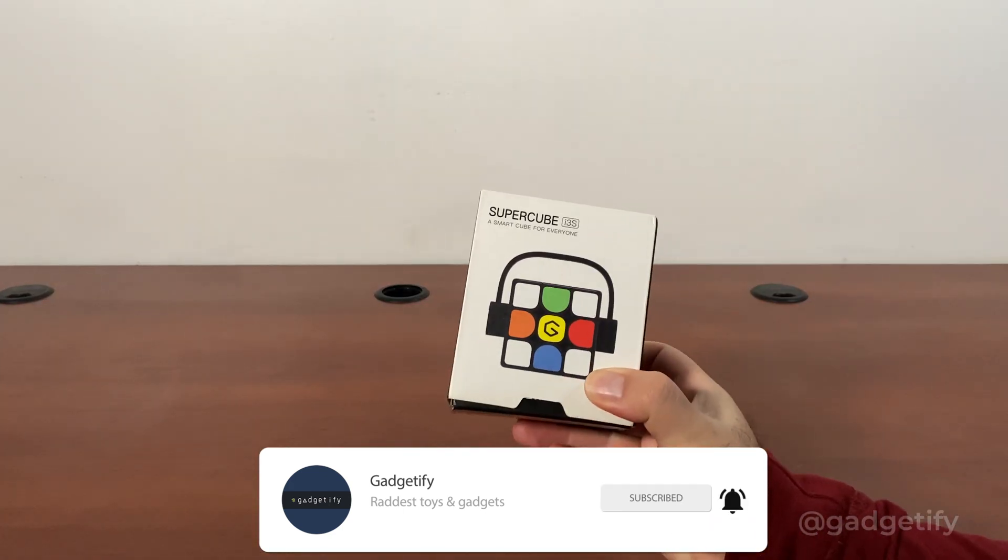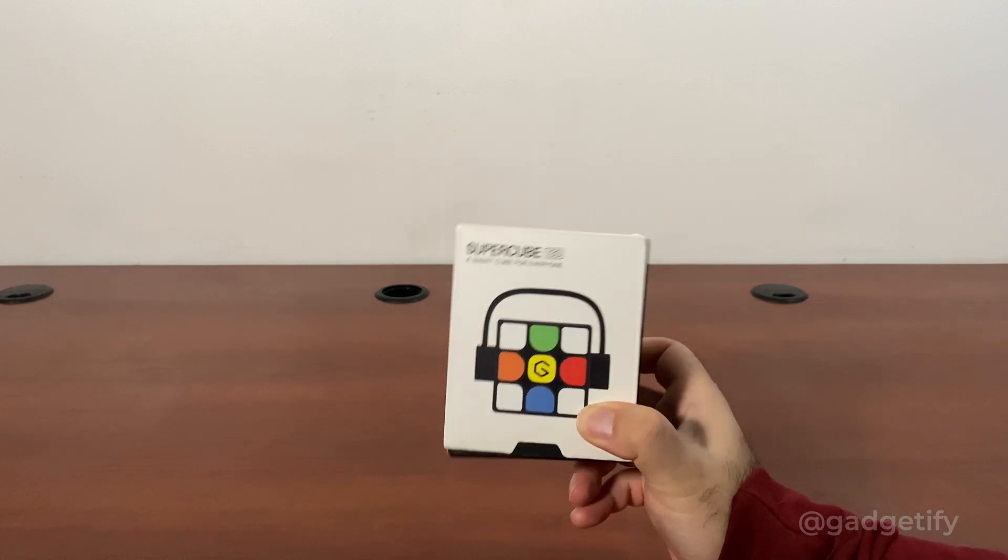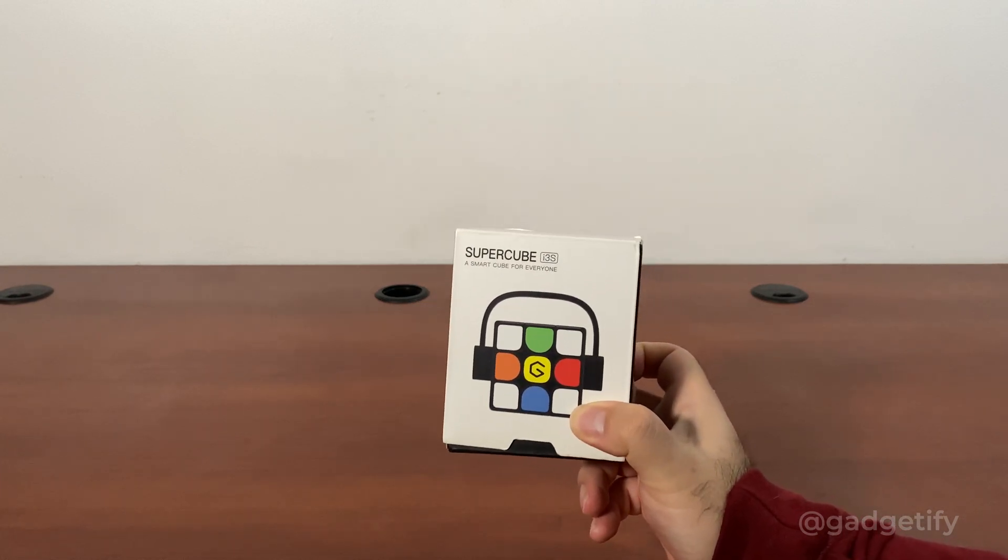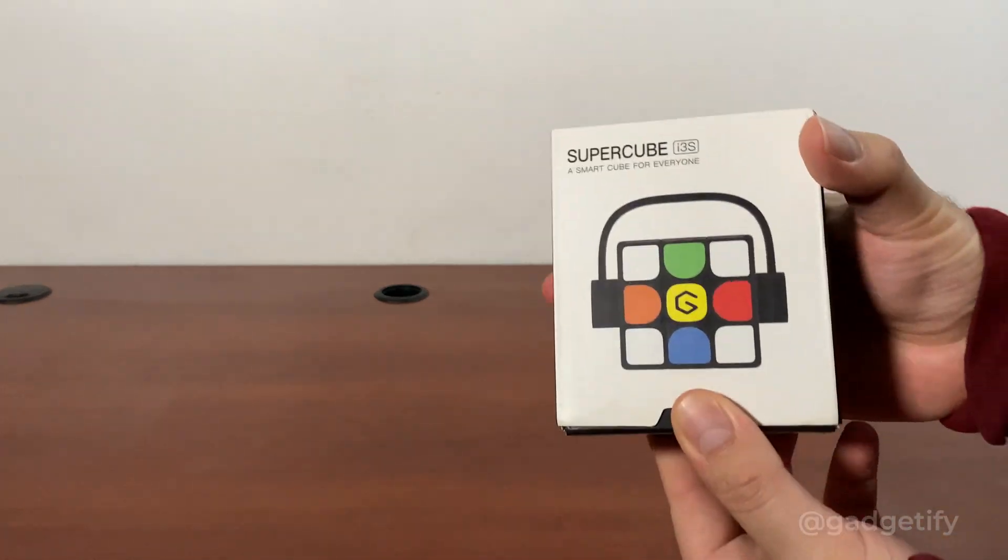Hey everybody, today I'm showing you another cool smart cube. This is the SuperCube i3s. It's a smart Rubik's cube that shows you how to actually solve by combining with your smartphone. Let's see what's inside.